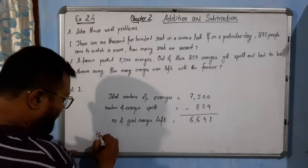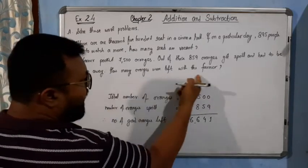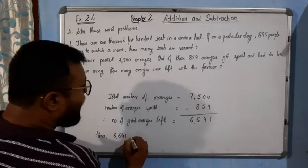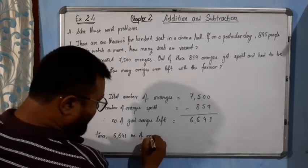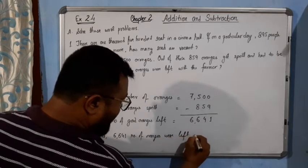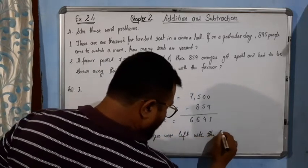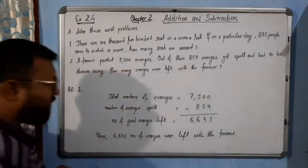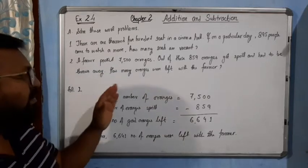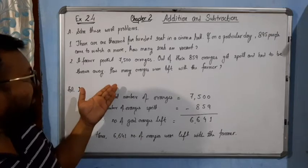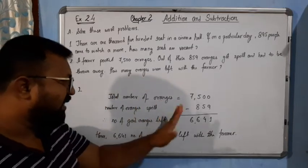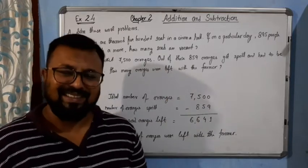Hence, 6641 number of oranges were left with the farmer. These are very simple calculations and very simple questions. What we need to do is understand the question very nicely and then plot our answer accordingly. I hope you have understood this one very nicely. Thank you.